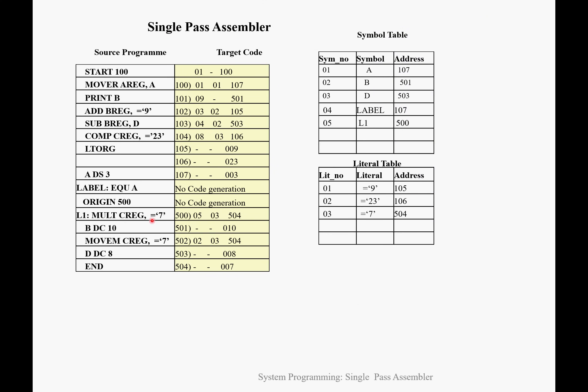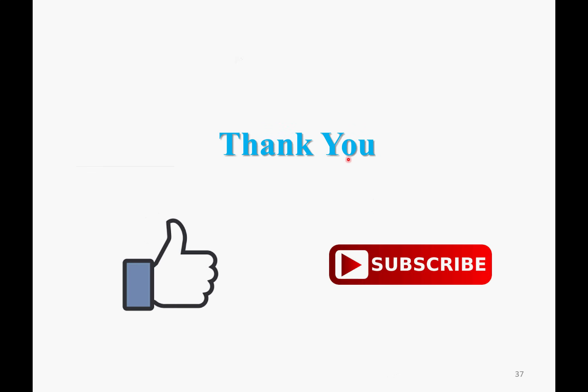This is our final output for the single-pass assembler: source program, target code, symbol table, and literal table. Thank you. If you like this video, please press the like button and subscribe to the channel.